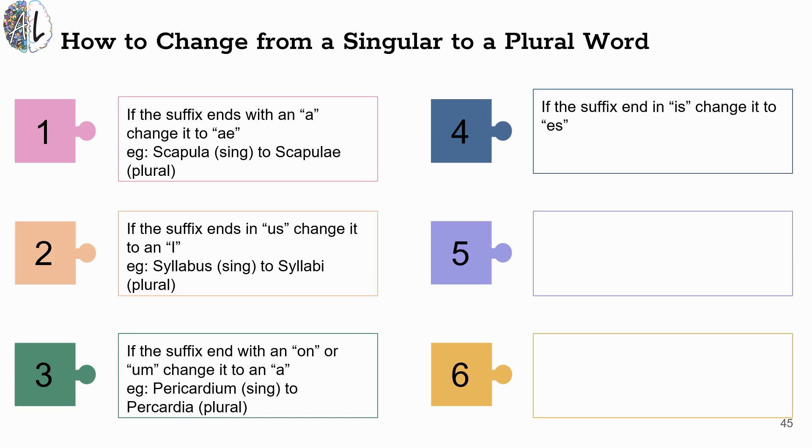If the suffix ends in an IS, we are going to change it to an ES to make it plural. So a diagnosis is singular, meaning they have one disease. But diagnoses with the ES ending changes it to having a multiple designation or a plural designation.